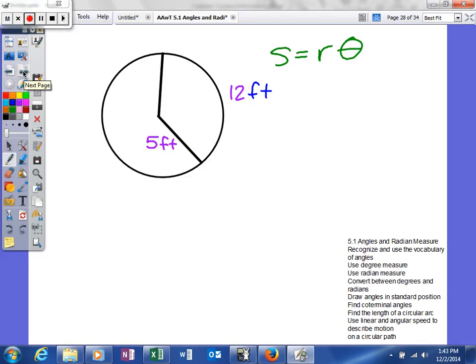So in the first one, as you can see, here's our problem. We have S is equal to R theta. We know our arc length is 12 feet, where our radius is 5 feet. So what we're actually looking for in this problem is going to be our angle.